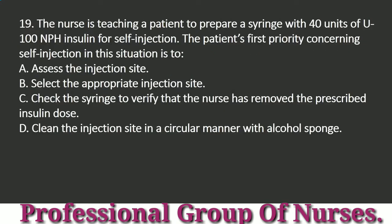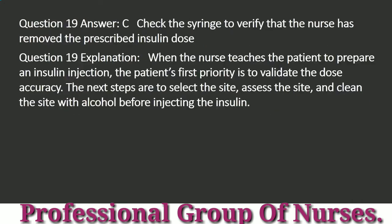Question 19: The nurse is teaching a patient to prepare a syringe with 40 units of U-100 NPH insulin for self-injection. The patient's first priority concerning self-injection is to: a. Assess the injection site. b. Select the appropriate injection site. c. Check the syringe to verify that the nurse has removed the prescribed insulin dose. d. Clean the injection site in a circular manner with alcohol sponge. Answer: c. Check the syringe to verify that the nurse has removed the prescribed insulin dose. Explanation: When the nurse teaches the patient to prepare an insulin injection, the patient's first priority is to validate dose accuracy. The next steps are to select the site, assess the site, and clean the site with alcohol before injecting the insulin.